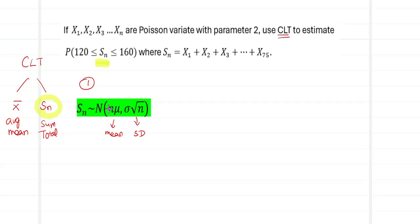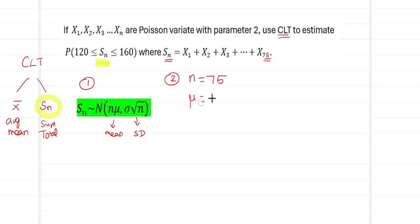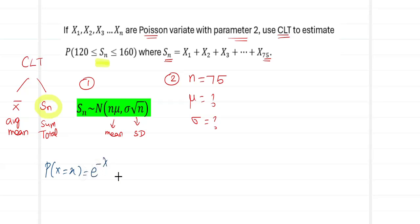The formula requires n, μ, and σ. From the question, s_n is x1 plus x2 up to x75, which means n equals 75. We still need μ and σ. Going back to the question, x1, x2, up to xn follow a Poisson distribution with parameter equal to 2. The Poisson distribution is given by P(x) = e^(−λ) · λ^x / x!, for x = 0, 1, 2, up to infinity.